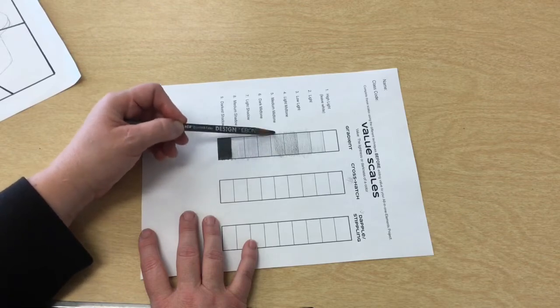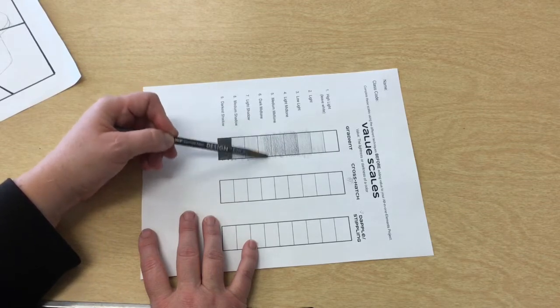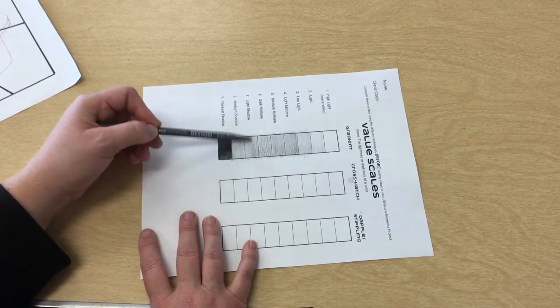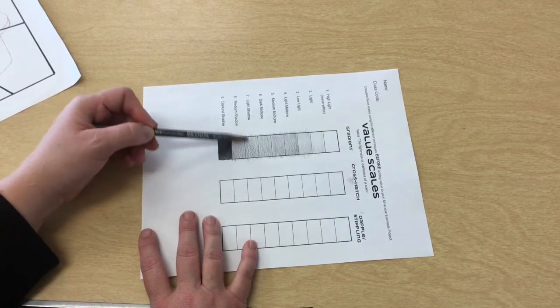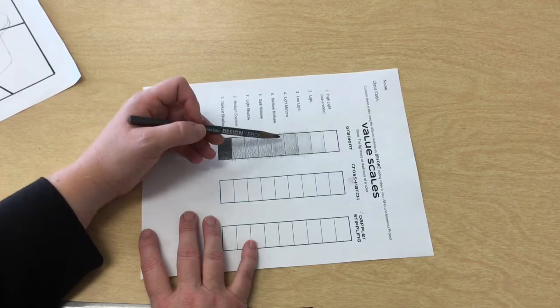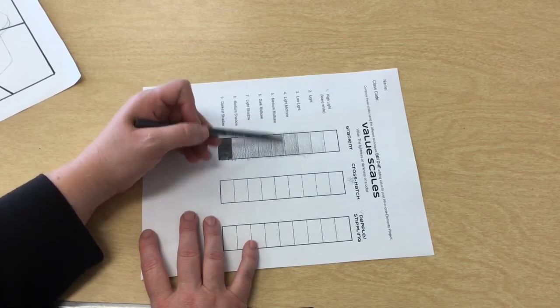But I want to make sure that there's enough of a difference that you can see it. So now I'm pressing a little bit harder. But I still have my pencil kind of far back on my hand. Maybe I move it up a little bit closer now because I want to even go a little bit darker.